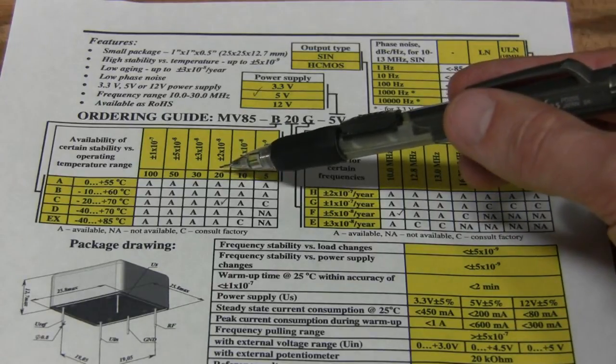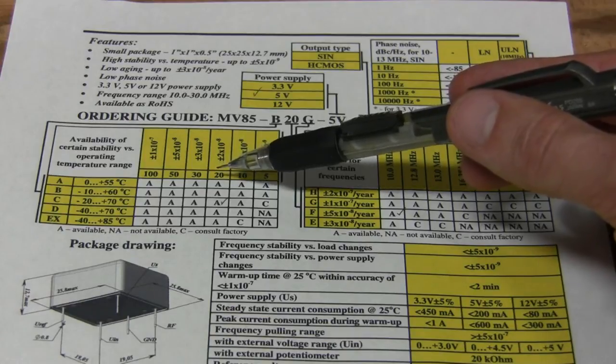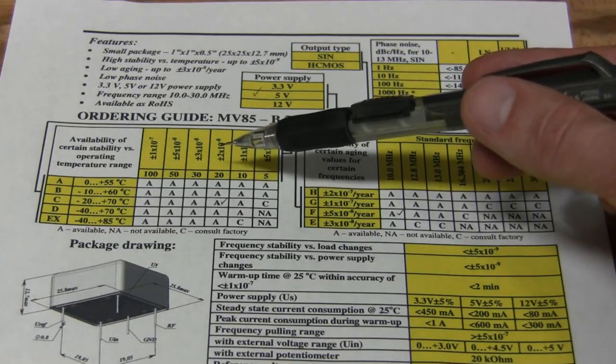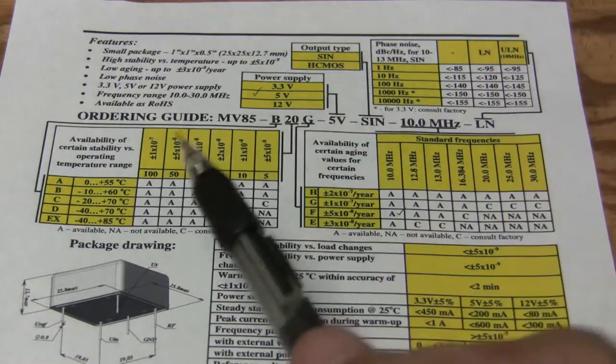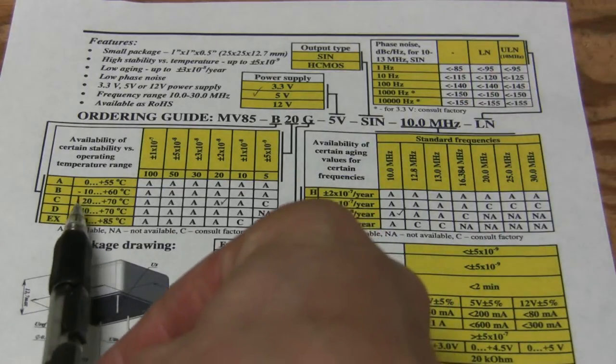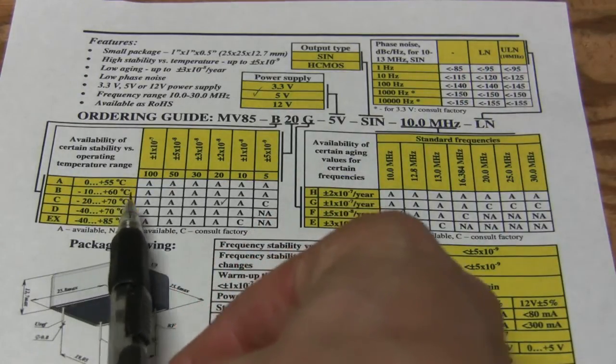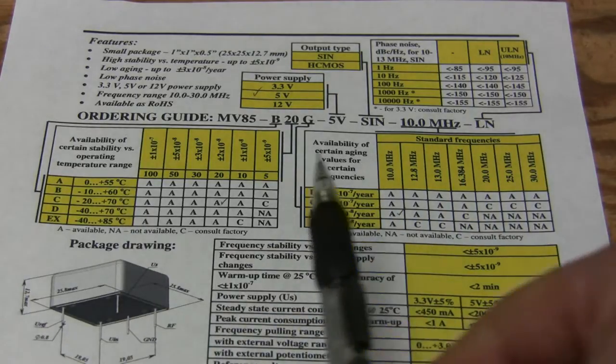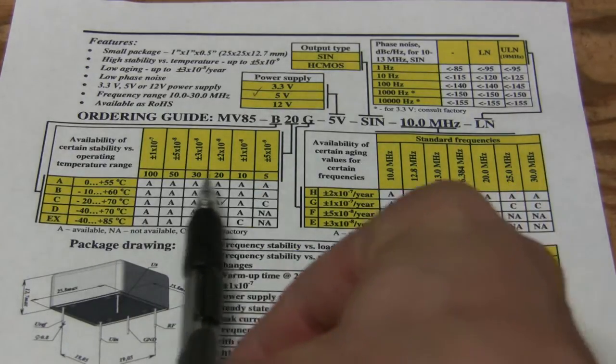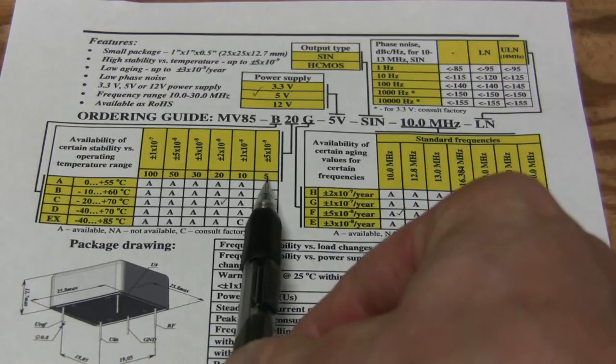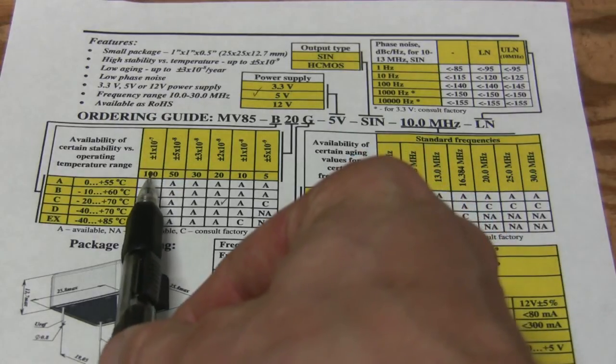It's rated at 20 parts per billion, which translates to 0.02 ppm within this range from minus 20 to plus 70 degrees C. And as you can see, they can range from 5 parts per billion to 100 parts per billion.